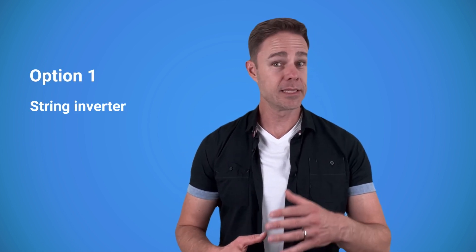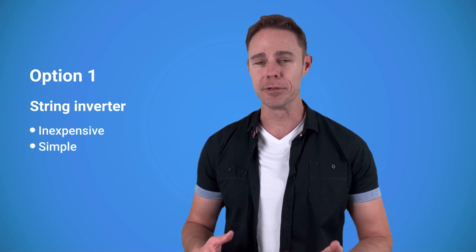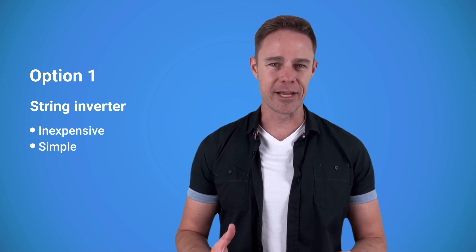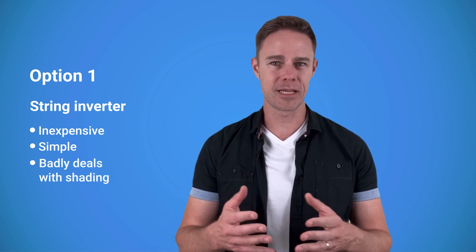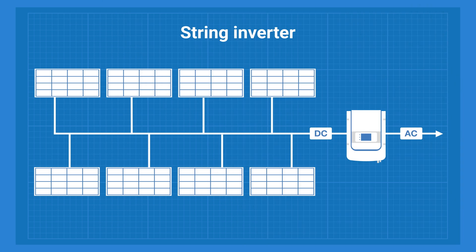The only real downside of a string inverter is how badly it deals with shading. Let's say you have several panels connected to each other - this is a string. When one panel gets shaded, the string inverter brings the production of every panel in a string down to the level of the worst one.